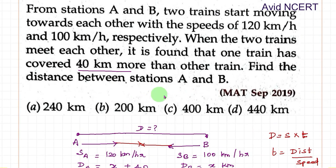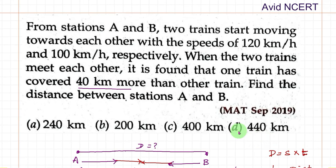Therefore, the total distance between the stations A and B is 440 km. Thanks for watching. If you have any doubts, please let me know in the comments.